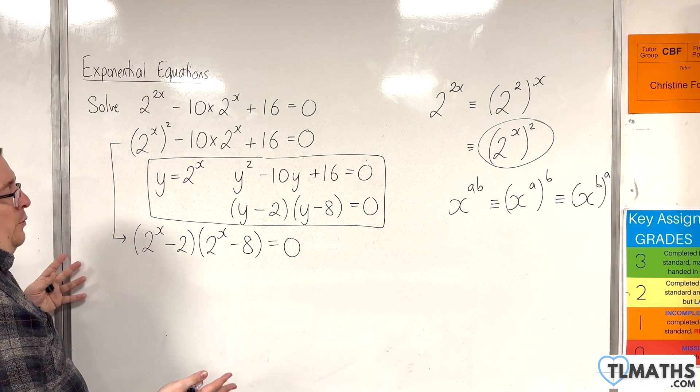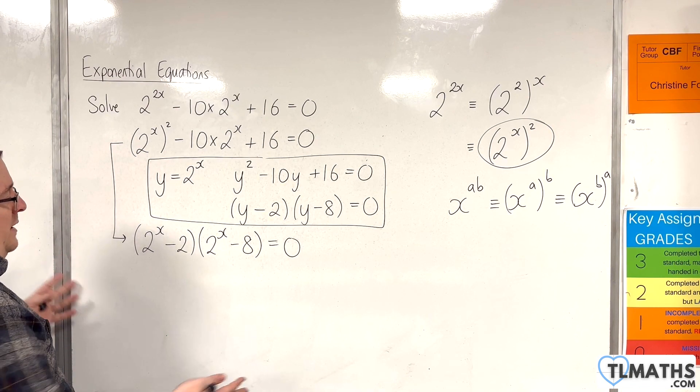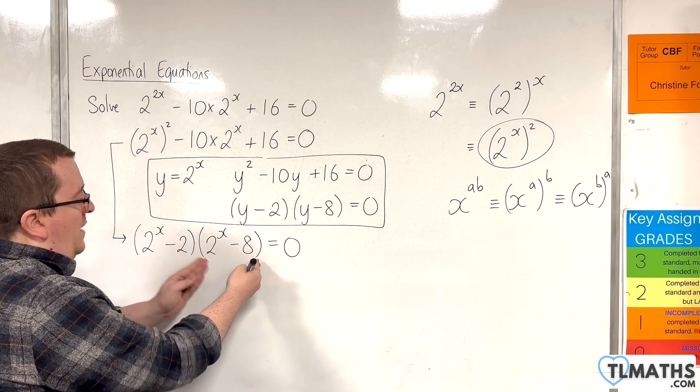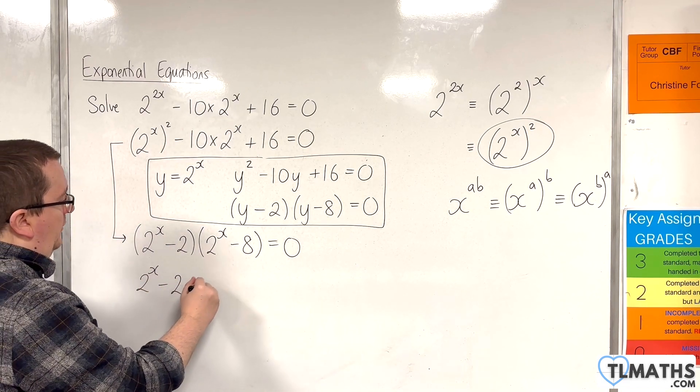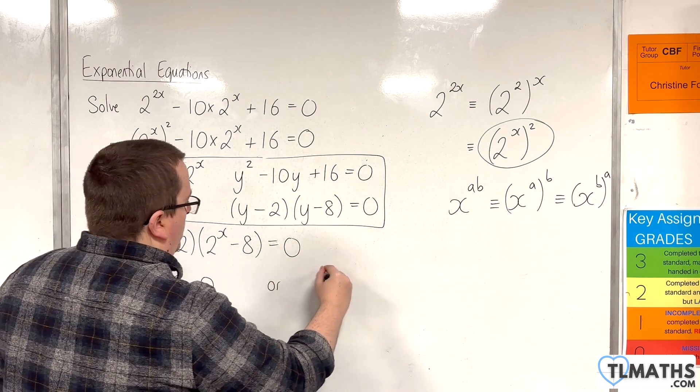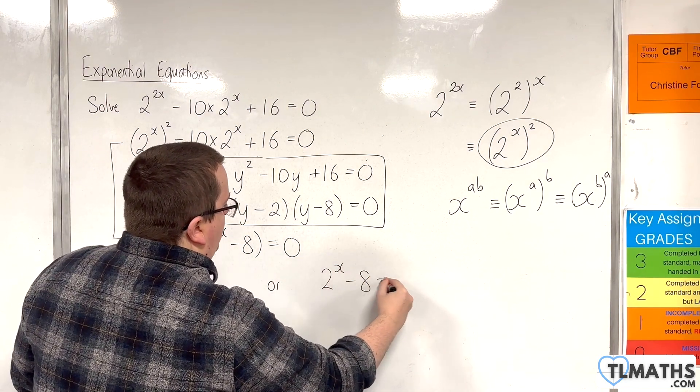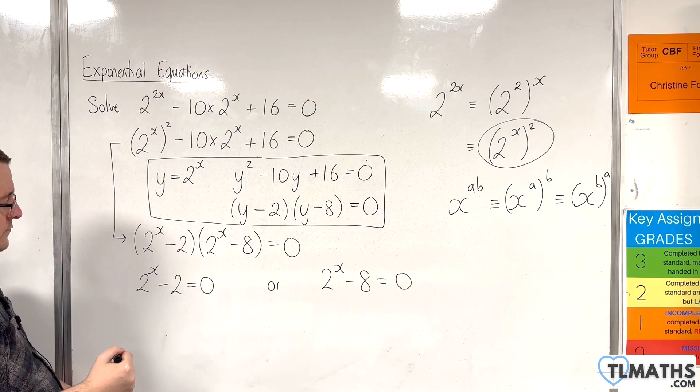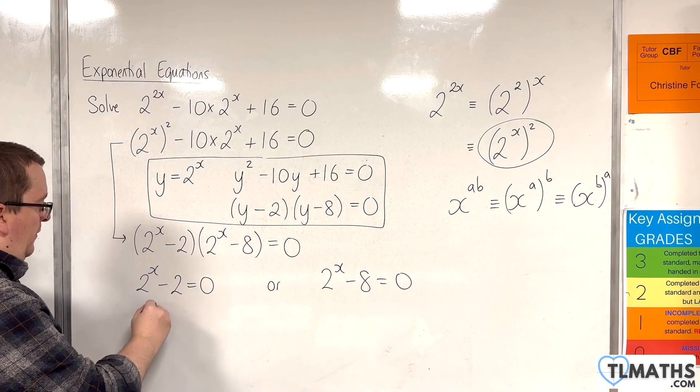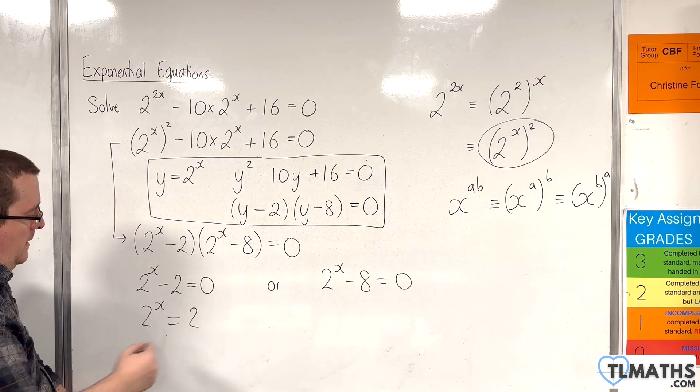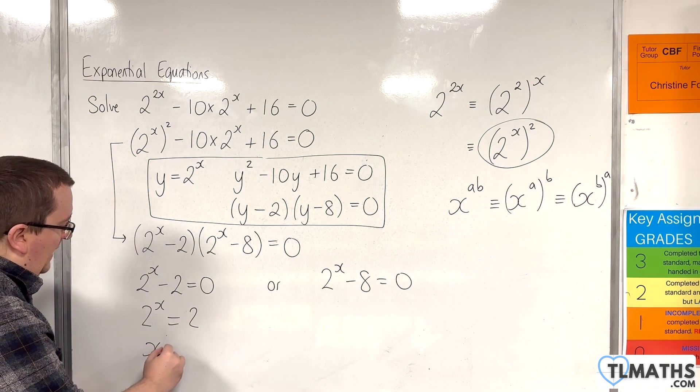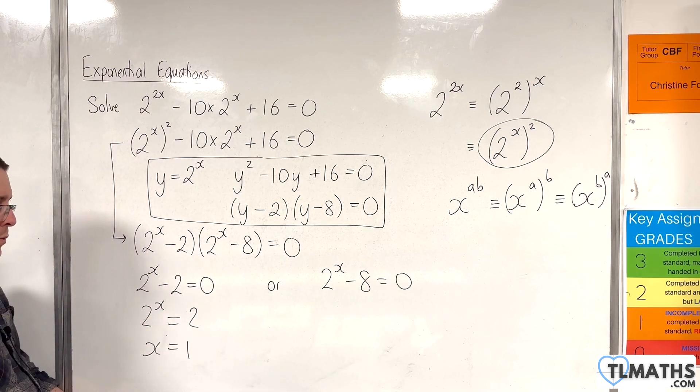We've solved this equation in much the same way as we're used to. Because either that bracket is 0, or that bracket is 0. So 2 to the x take away 2 is 0. Add the 2 to both sides. Let's solve this one first. And so that would mean that x is equal to 1. 2 to the 1 is equal to 2.